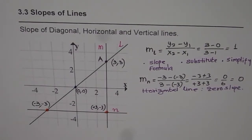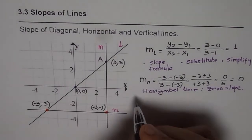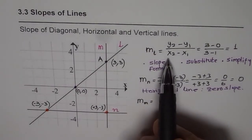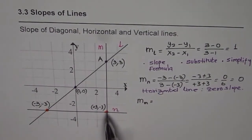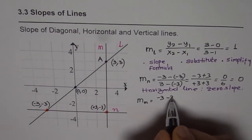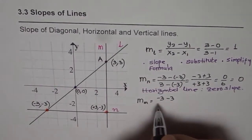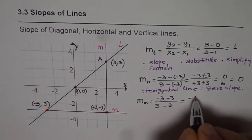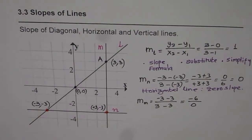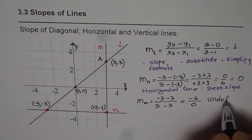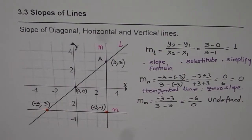Now let's take the third line, which is the vertical line, named M. Applying the slope formula — y2 minus y1 divided by x2 minus x1 — we consider two points on it. Substituting the values, we get y2 minus y1 divided by x2 minus x1, which gives us minus 6 over 0. Minus 6 over 0 is undefined, so the slope is undefined. All vertical lines have undefined slope.